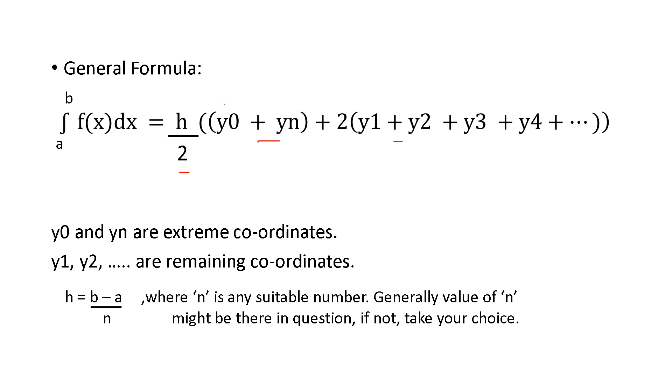Here, y0 and yn are the extreme coordinates and y1, y2, y3, y4 are the remaining coordinates. h equals b minus a by n. Just substitute, direct substitution in the formula.